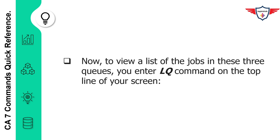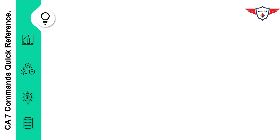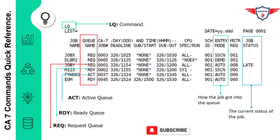When you type LQ and hit enter without any additional parameter, this is how the screen looks. I want to highlight three important columns. The second column is the queue name, highlighted in red. Then you have entry mode, highlighted in green. The last one is job status, highlighted in blue. The first column is the job name. Since I have not specified any criteria, it will list down all jobs available at that point in time. In the queue name column, REQ is used for request queue.